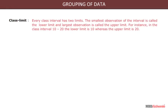Class limit: Every class interval has two limits. The smallest observation of the interval is called the lower limit, and the largest observation is called the upper limit. For instance, in the class interval 10 to 20, the lower limit is 10 whereas the upper limit is 20.